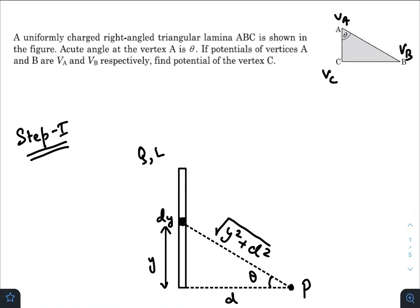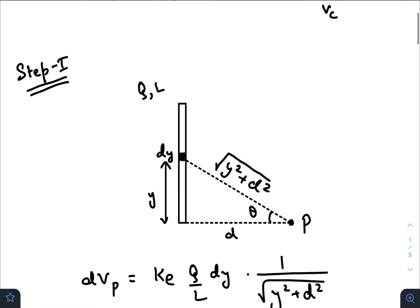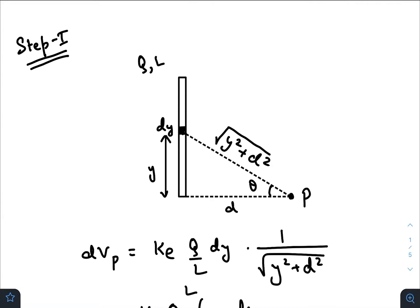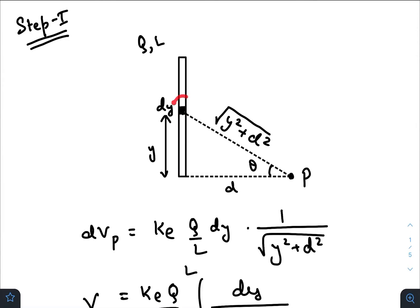To solve this question, we need to break it into a few small steps. Step number one: we will just ignore the question at the beginning. Let us first find out the potential at a perpendicular distance d from one of the edges of a charged rod of total charge Q, length L, at a point P. So for this rod, potential at point P—how will we find that out? We will consider a small charge dq of length dy and find the potential at P due to this small charge.